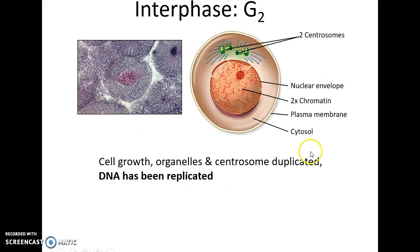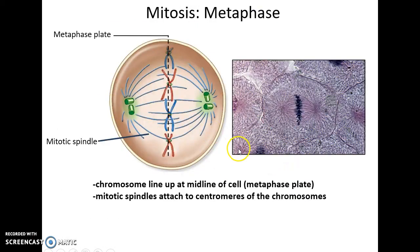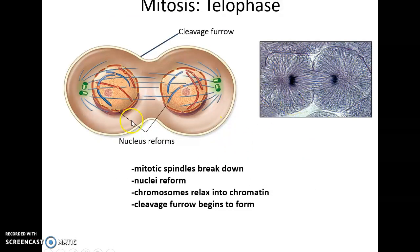During G2, there are two copies of the centrosomes and the nucleus is intact. In prophase, the nucleus breaks down, chromatin becomes chromosomes, and centrosomes move to opposite sides forming mitotic spindles. During metaphase, chromosomes line up at the metaphase plate in the middle of the cell, and spindles attach to the centromeres. During anaphase, chromosomes are pulled apart with each chromatid going to an opposite side. Then telophase begins, where the nucleus starts to reform.